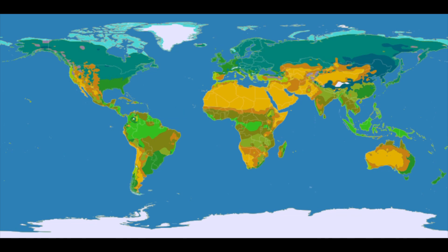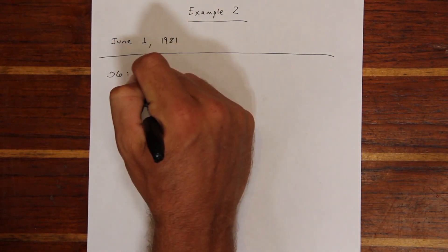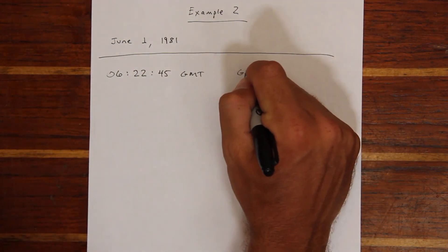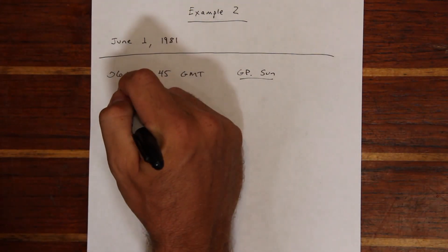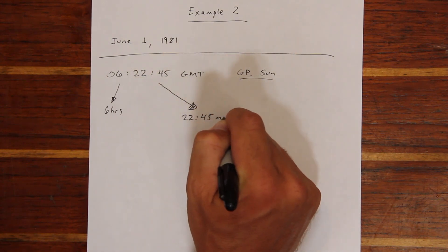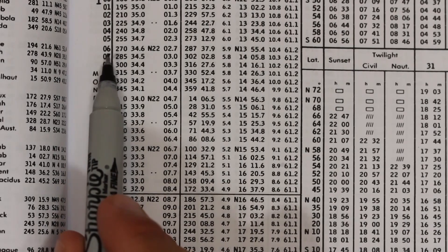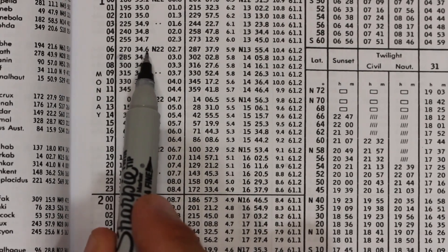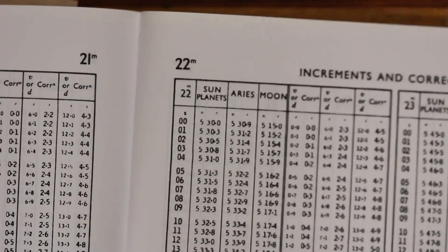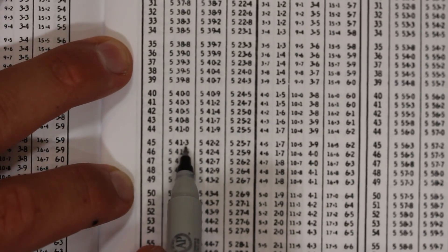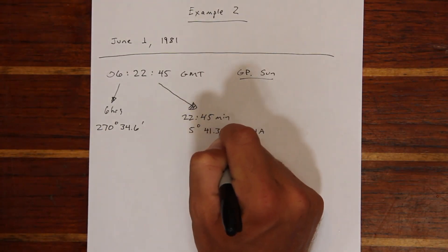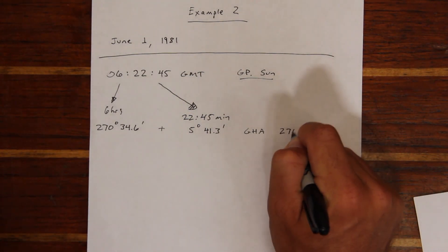Let's look at an example problem in which we determine the geographic position of the Sun. We're finding the GP at a specific time: 6 hours, 22 minutes, and 45 seconds. We break that time into two parts — 6 hours, then 22 minutes and 45 seconds. For Greenwich Hour Angle we look up the hourly value at 6 o'clock for the date in question and come up with 270 degrees 34.6 minutes. We still have to account for the 22 minutes and 45 seconds, so in the increments and corrections pages we open to 22 minutes, scroll to the 45-second point, and find the GHA correction for the Sun: 5 degrees 41.3 minutes. Adding them together we get a total GHA of 276 degrees 15.9 minutes.